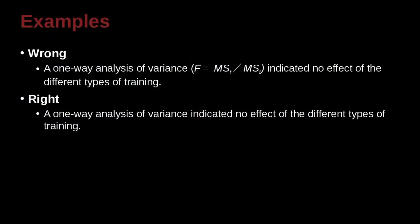So the correct way to do this would be just skip over that. A one-way analysis of variance indicated no effect of the different types of training. So we don't include it at all. We just go ahead and say the sentence very clearly.